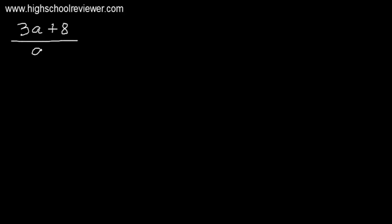Adding and Subtracting Similar Rational Algebraic Expressions. How do we add and subtract similar rational algebraic expressions? Let's have an example. We have 3a plus 8 all over a plus 3, and we are going to add this with a plus 4 all over a plus 3. These are similar rational algebraic expressions because they have the same denominator.